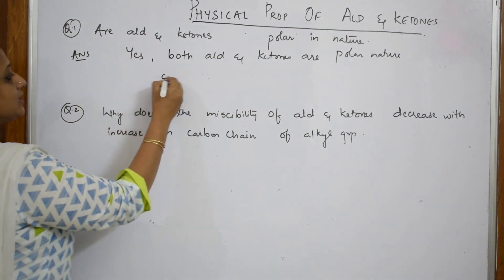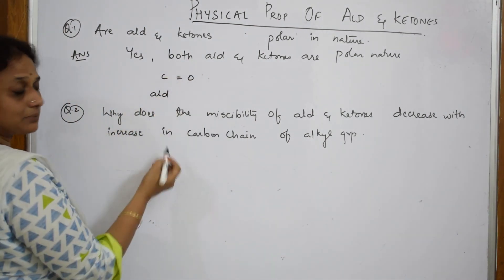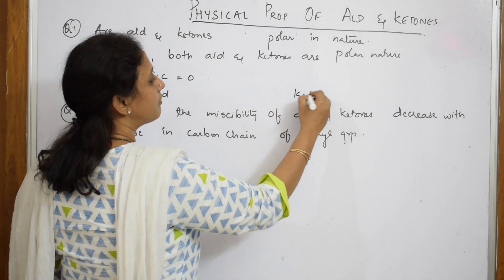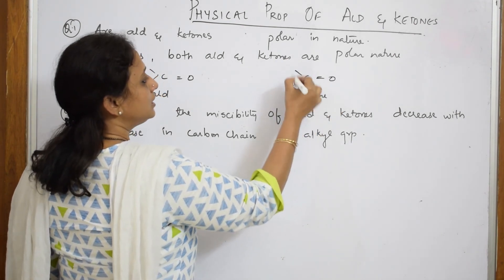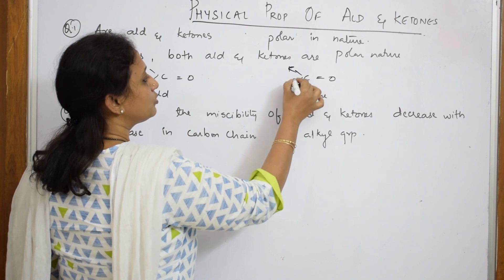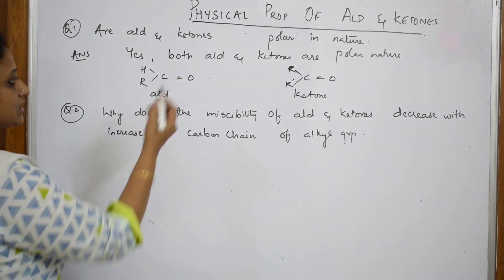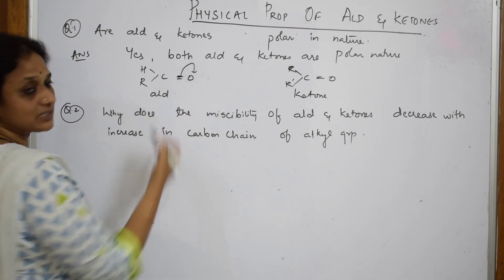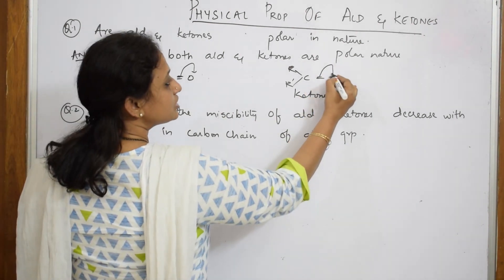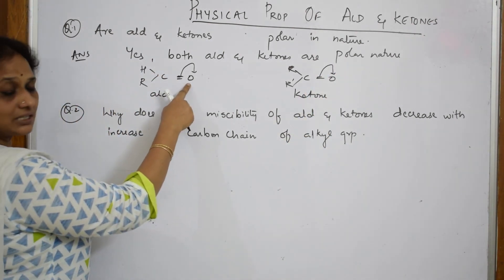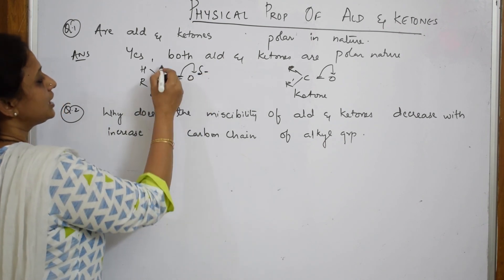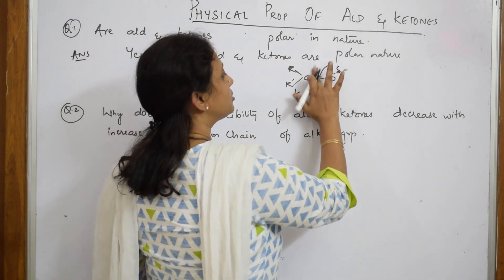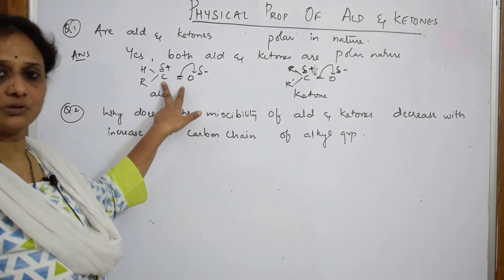An aldehyde contains a carbonyl group with one hydrogen and one alkyl group. A ketone has a carbonyl group with two alkyl groups. Why are they polar? Because of the electronegative nature of oxygen, the shared pair of electrons is dragged by oxygen. This causes oxygen to attain a partial negative charge and carbon to attain a partial positive charge, forming dipoles — making them polar.